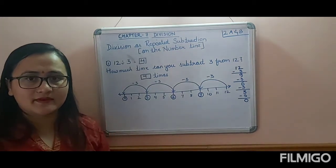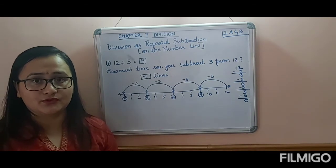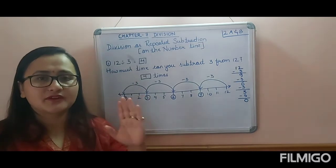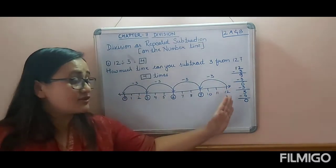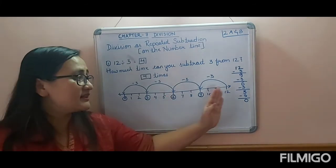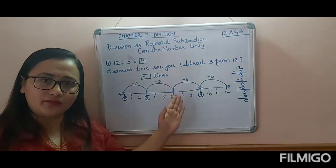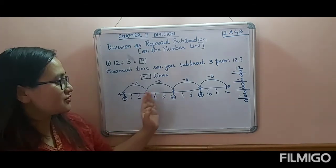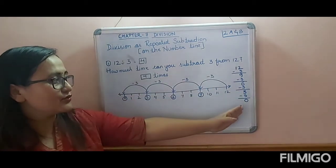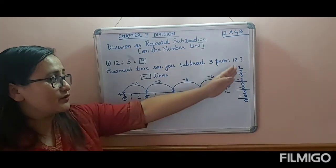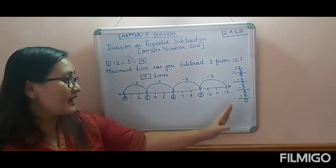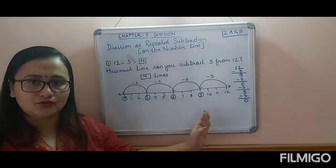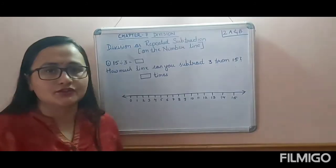Let me do one more example so it is even more clear. Always remember: when doing division on a number line, you start jumping from the backward — from the last number. That is how you get your answer. Here I have shown you: 12 minus 3 is 9, 9 minus 3 is 6, 6 minus 3 is 3, 3 minus 3 is 0.